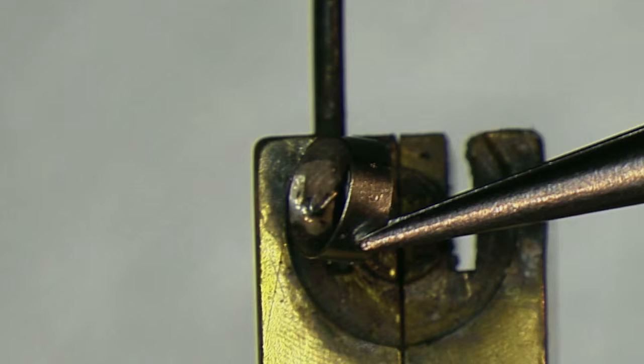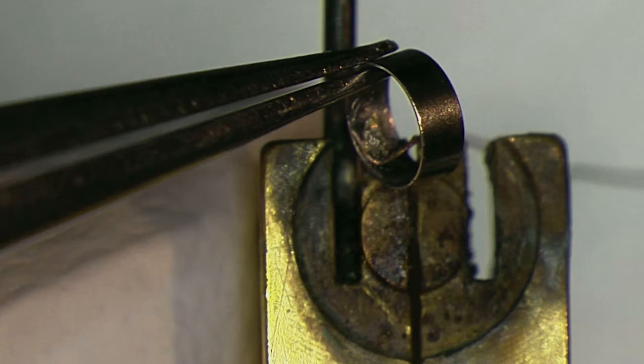Too much heat will make the joint look darker, and will make the joint weaker. Too little heat will make the joint look rough and not shiny. This will also make the joint weaker.